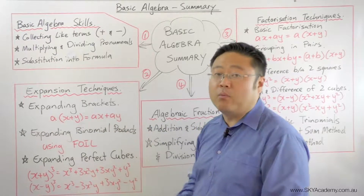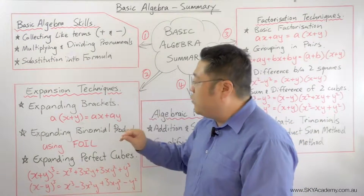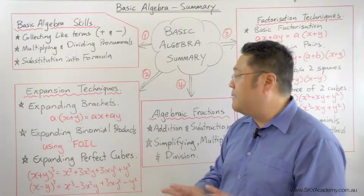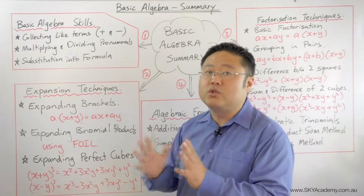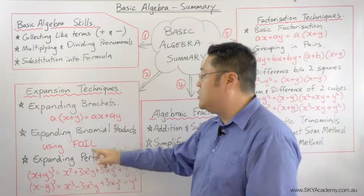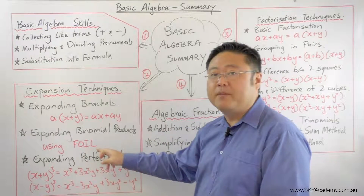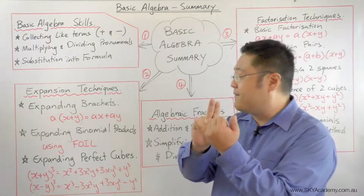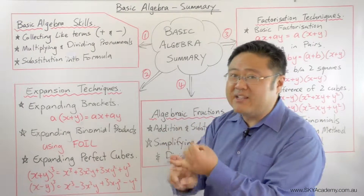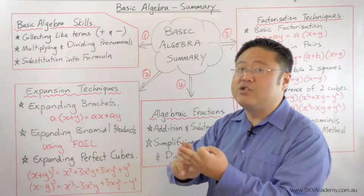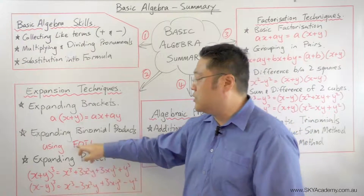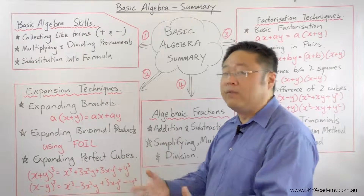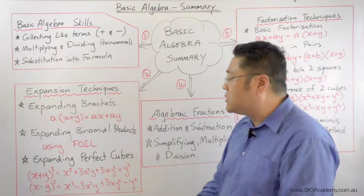For example, in a(x + y), the a multiplies by the x and the a multiplies by the y to give ax + ay. We also looked at binomial products. For binomial products, we use the FOIL method: multiply the Front two terms, the Outside two terms, the Inside two terms, and the Last two terms — Front, Outside, Inside, Last.